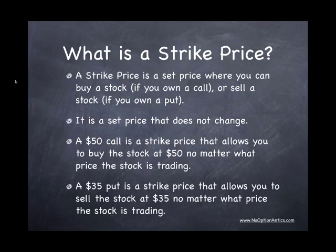As an example for a put, if I had a $35 put, the put allows me to sell stock at $35 no matter where the stock is trading. Obviously, if the stock were above $35, I would not want to sell it for $35. But if the stock were below $35, I would want to do so.